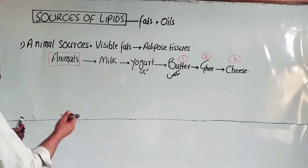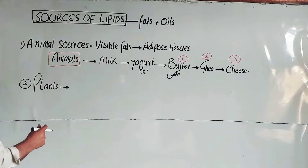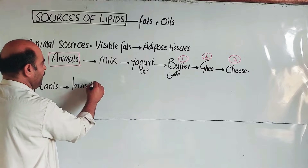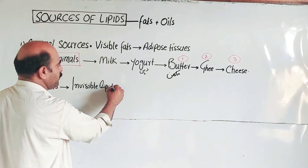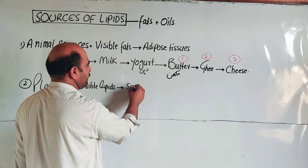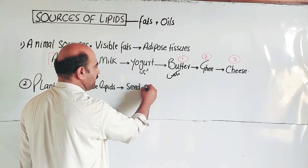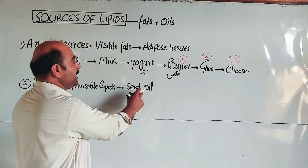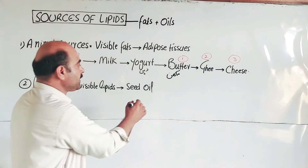The second main source is plants. In plants, lipids are invisible — they are called invisible lipids. Plants store extra lipids in their seeds. The seed oils are a type of lipid stored in the seeds of plants.